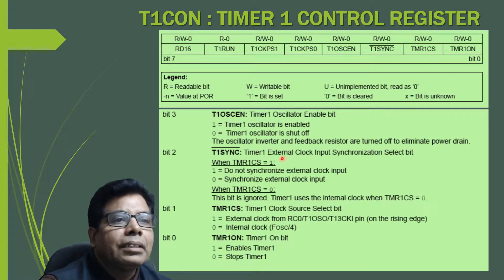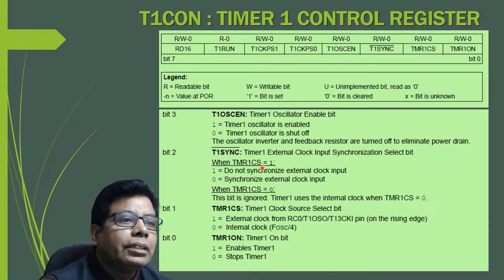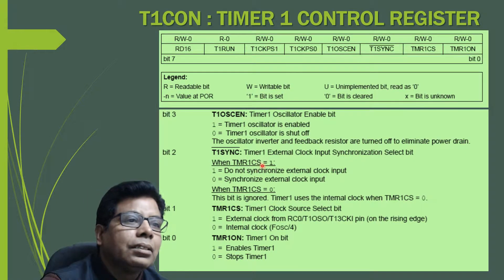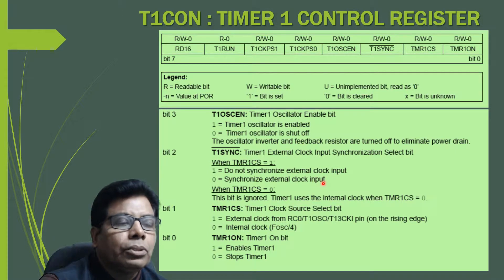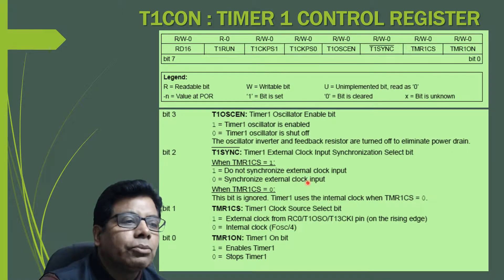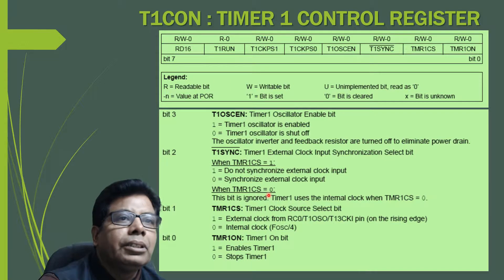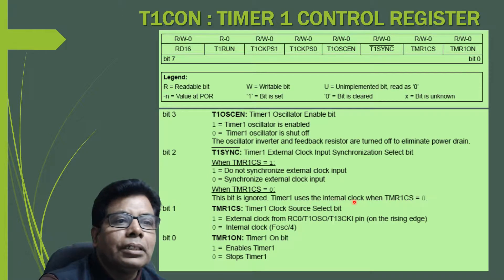Bit 2 is the Timer 1 external clock input synchronization select bit. When TMR1CS is 1: if this bit is 1, it does not synchronize the external clock input; if 0, it synchronizes the external clock input. When TMR1CS is 0, this bit is ignored and Timer 1 uses the internal clock.